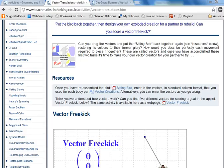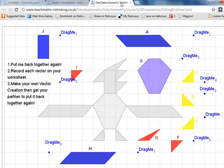The first part of this activity is to click on sitting bird and try to put the bird back together. It's greyed out in the middle there, and all its body parts have been moved to the four corners. You have to decide which bit goes where.